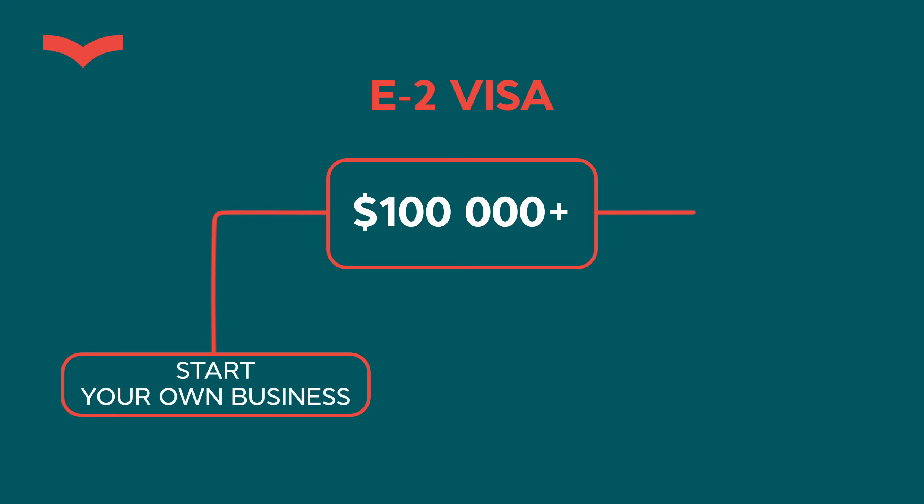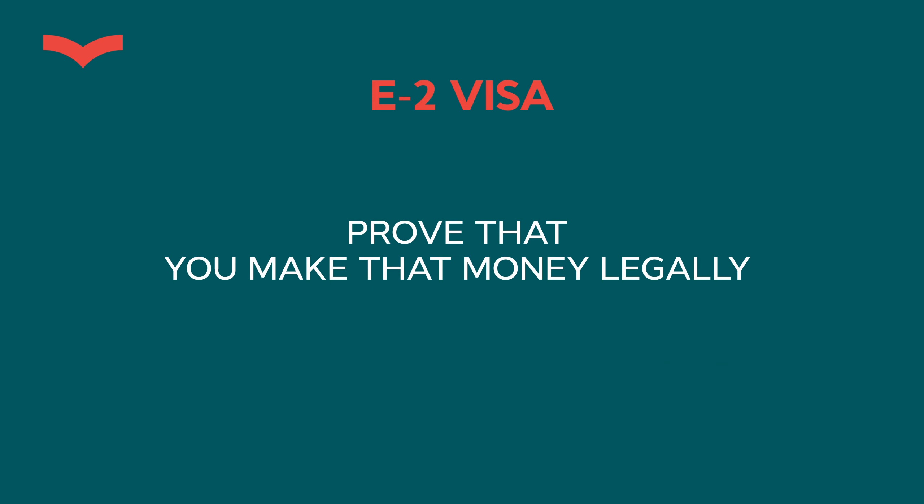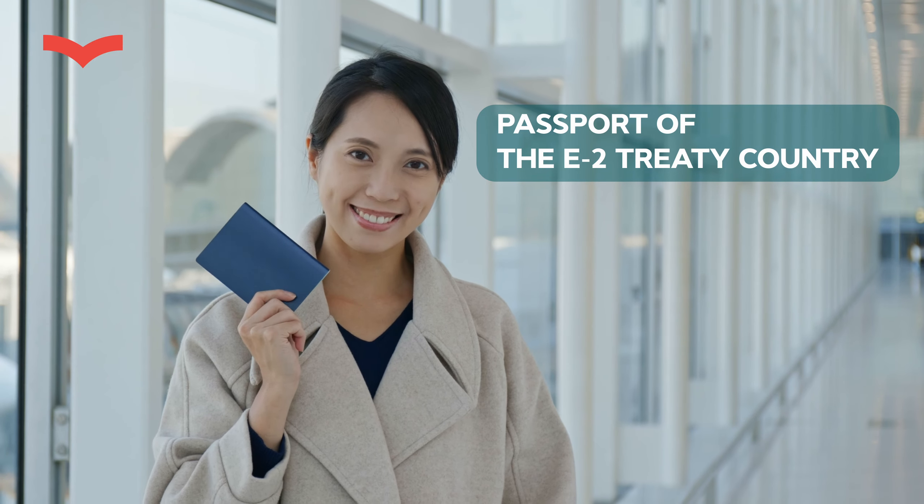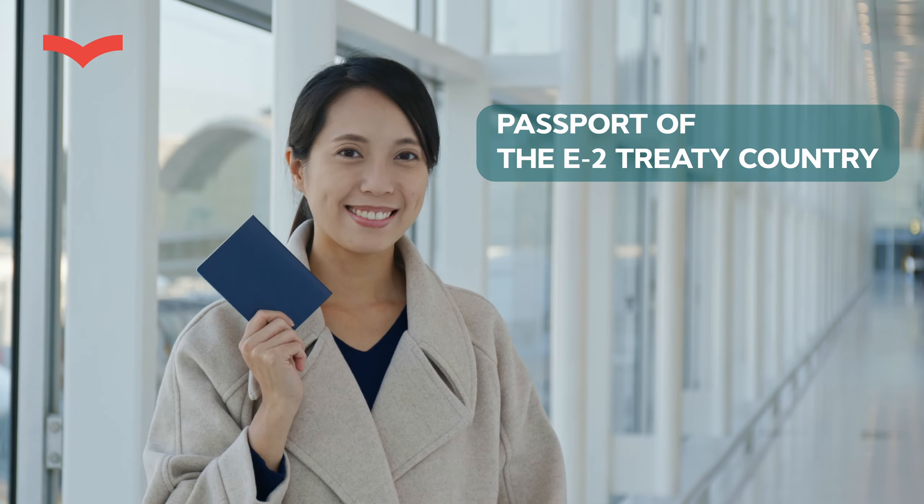The E2 visa is a little different — you don't need a company outside the US. All you need is $100,000 or more to invest in a startup or purchase an existing business. We need to prove you made that money legally, paid taxes, and can explain all transactions. You also need the right passport, as not every country falls within the E2 treaty category. As long as you provide for a couple of jobs and demonstrate profitability, you can extend the visa indefinitely — from three months initially for some countries like Moldova and Ukraine, up to five years for countries like Germany and Canada.